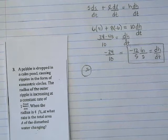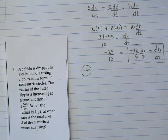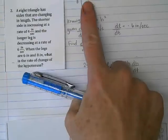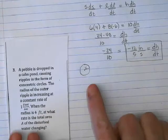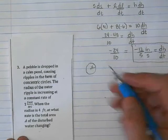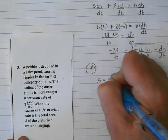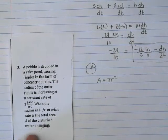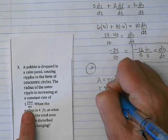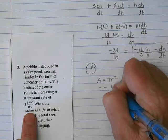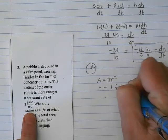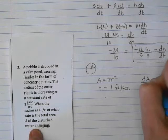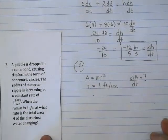Now sometimes, just beware, sometimes they give you the area at a given time and you have to figure out the radius. So sometimes, just like here where we had to figure out the hypotenuse, you might have to figure something out. We know that area of a circle is pi r squared. We know that the rate is increasing at a constant rate of 1 foot per second. And we're trying to find out what is dA/dt.